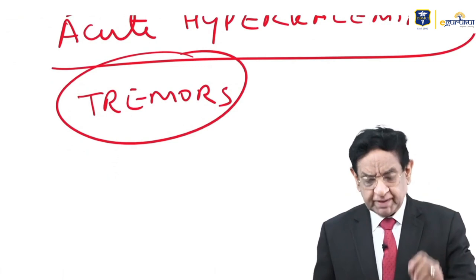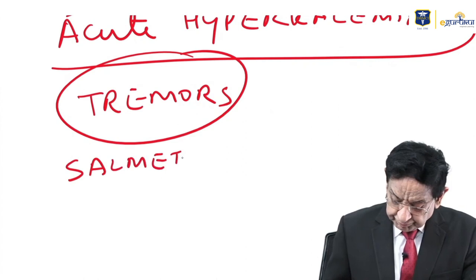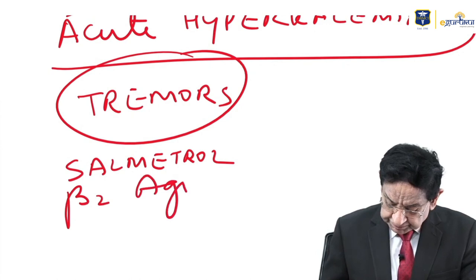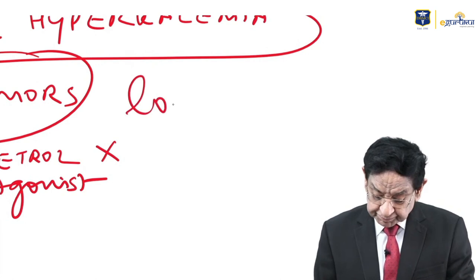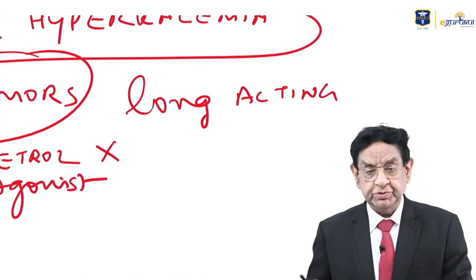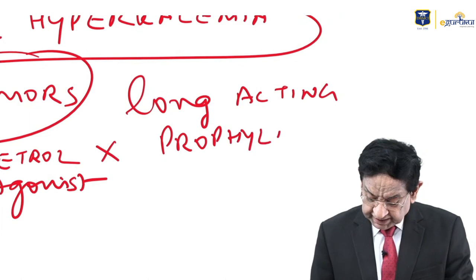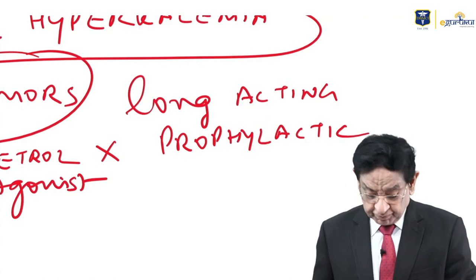Salmeterol is also a beta-2 agonist, but it is not used in acute attacks. It is a long-acting drug used as a prophylactic drug. It is not used in the acute attack — this is a very important point.